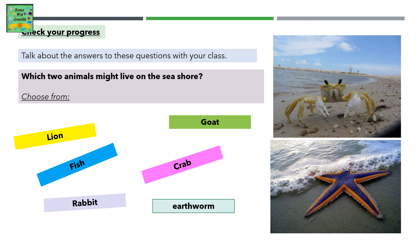Check your progress. Talk about the answers to these questions with your class. Which two animals might live on the seashore? Choose from: Lion, Fish, Rabbit, Crab, Goat, Earthworm.